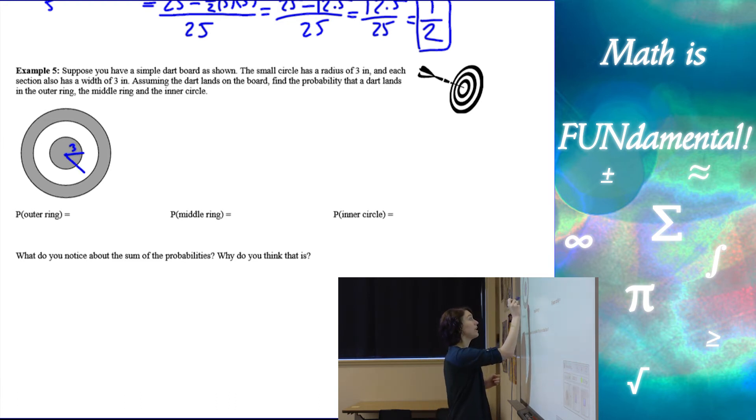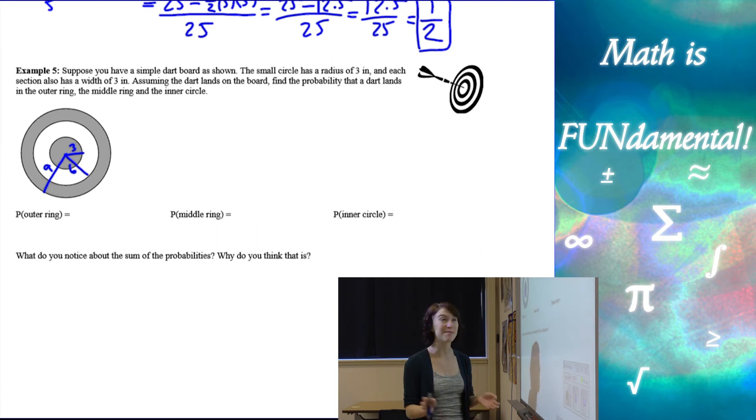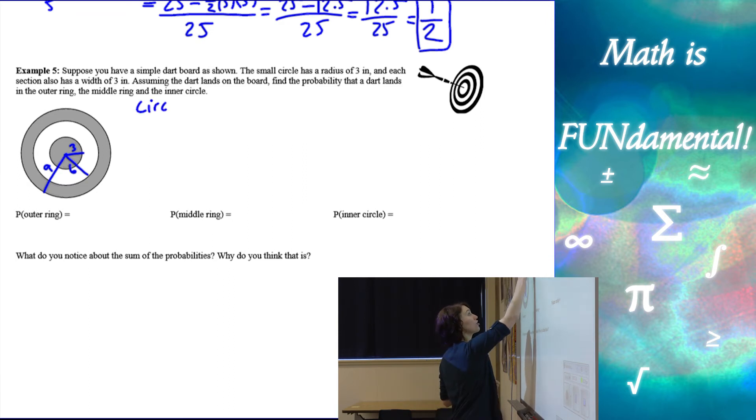So that means our medium circle is going to have a radius of 6 and our large circle is going to have a radius of 9. So each one is 3 units. Assuming the dart lands on the board, they have some skill involved here, find the probability that it lands in the outer ring, the middle ring and the inner ring or the inner circle. So let's talk about our circles and then our rings. So we're going to kind of do this step by step.